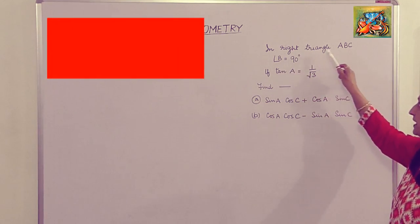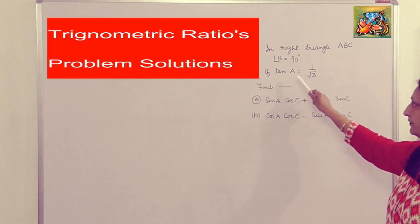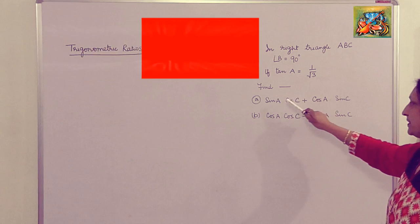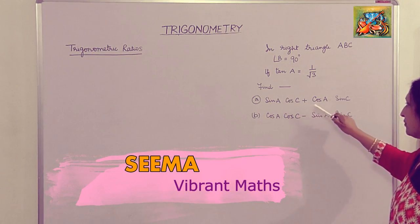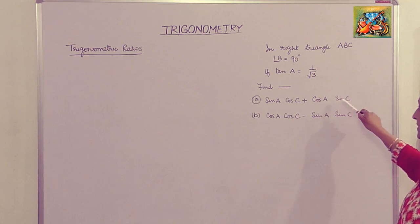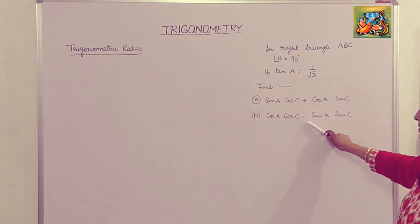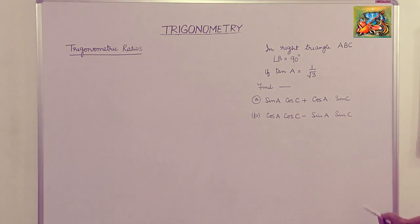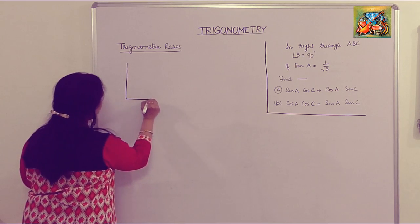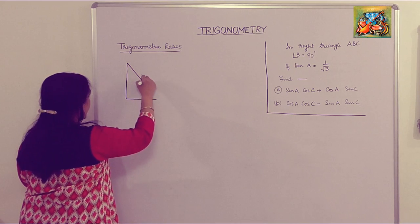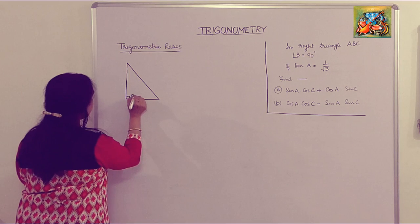Here is a question: in right triangle ABC, if angle B is equal to 90 degrees and tan A is equal to 1 upon root 3, find the value of sin A into cos C plus cos A into sin C. Another part of the question is cos A into cos C minus sin A into sin C. First of all, make the figure of the right angle triangle ABC where angle B is equal to 90 degrees.